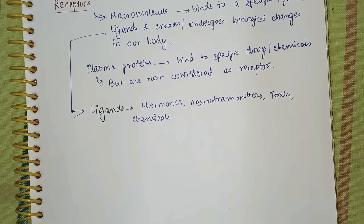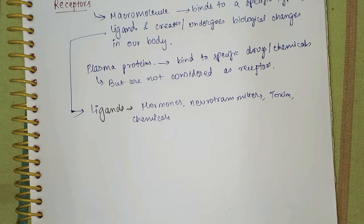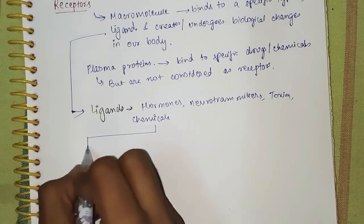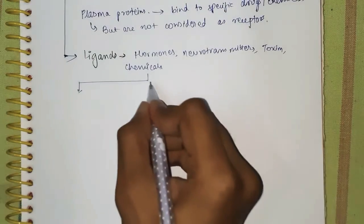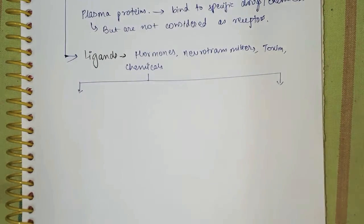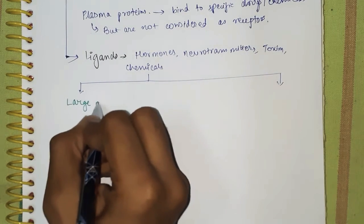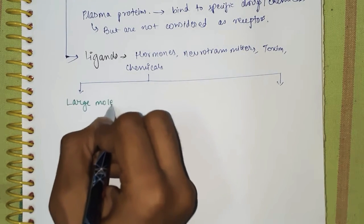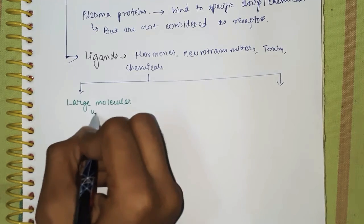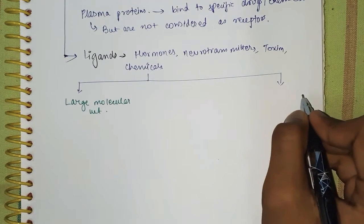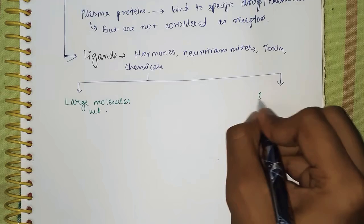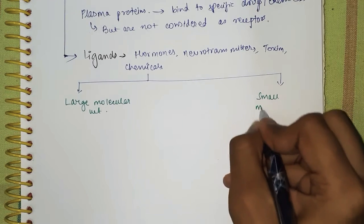Ligands are basically of two types: those with large molecular weight and another class with small molecular weight.